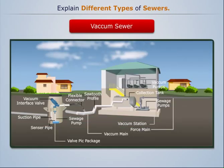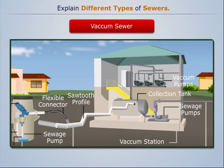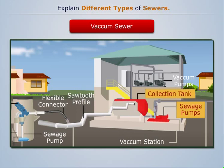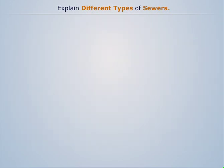Vacuum sewer systems use a central vacuum source to convey sewage from individual households to a central collection station. A central source of power is required to operate vacuum pumps and maintain vacuum on the collection system. A gravity line carries wastewater down to the collection chamber.